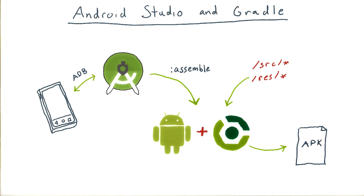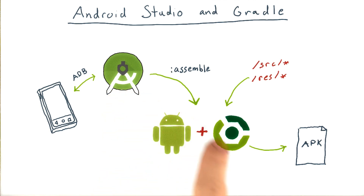Even though Android Studio isn't building your project, it still needs a deep model of your project so it can provide features like code completion and auto importing. It maintains its own internal model of your project, and when a project is loaded or a Gradle build script changes, Android Studio needs to synchronize its internal model with Gradle's model.